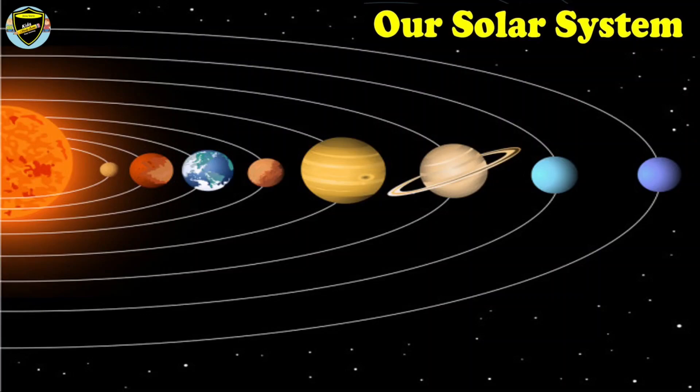We call it a solar system because everything in it is centered around the Sun, and solar means something related to the Sun. As you see how our solar system looks, let's see the names of planets, starting from the one closer to the Sun.